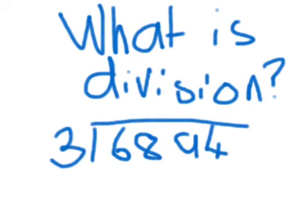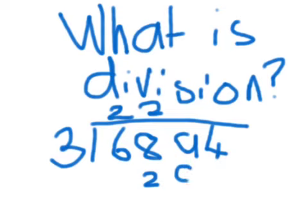So 3 goes into 6 twice. 3 goes into 8 twice with a remainder of 2. No — you bring the 9 down because you have a remainder.